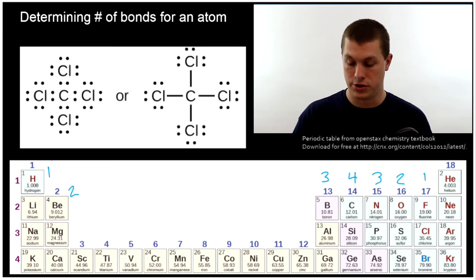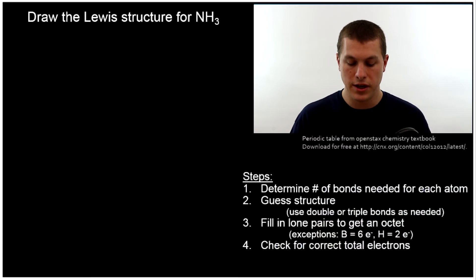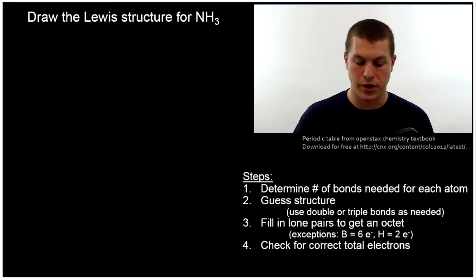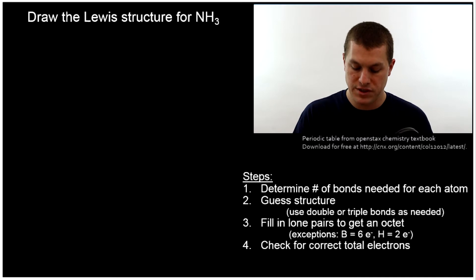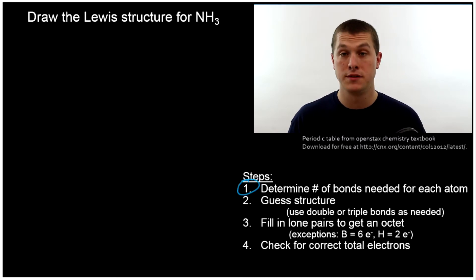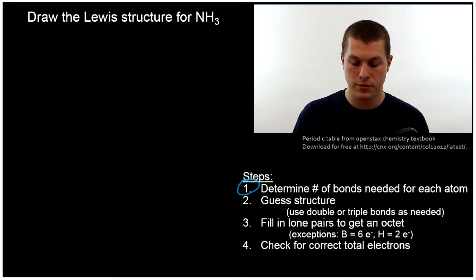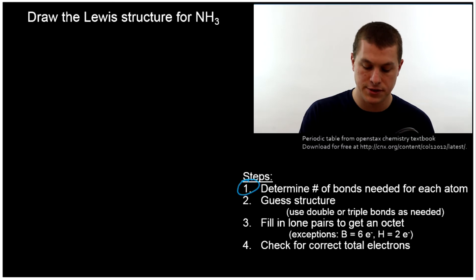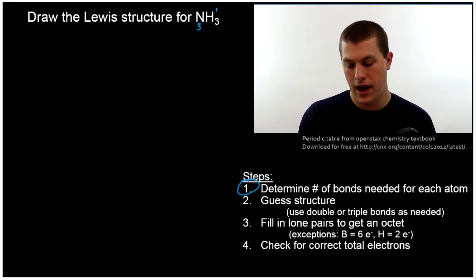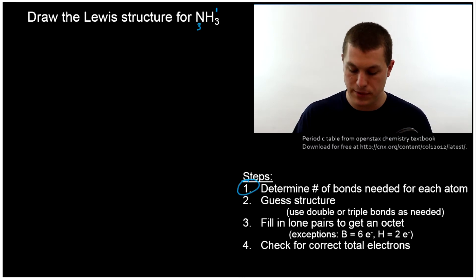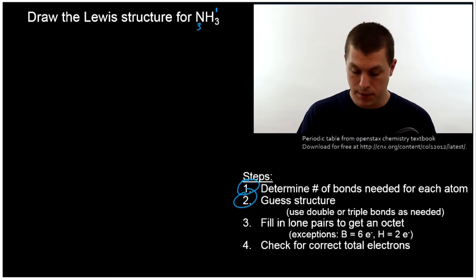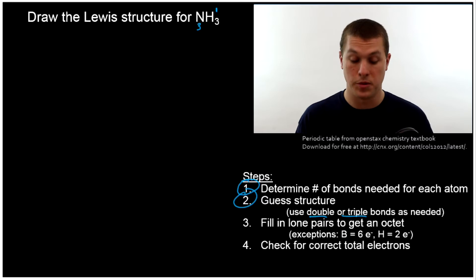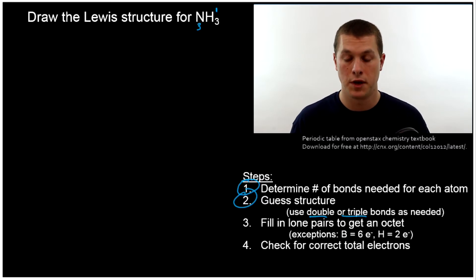Let's go ahead and try to draw a Lewis structure. Here, we're asked to draw the Lewis structure for NH3, which is ammonia. The first step is to determine the number of bonds needed for each atom. Nitrogen needs three, and hydrogen needs one. Step two is to guess the structure. What we've drawn so far are called single bonds — sometimes you use double bonds, and sometimes you use triple bonds. You don't need them for this molecule, but we'll use some in a second.